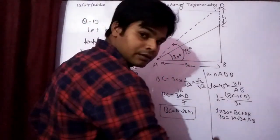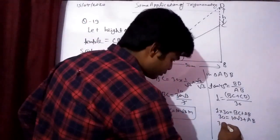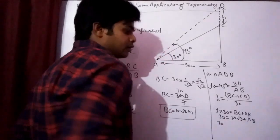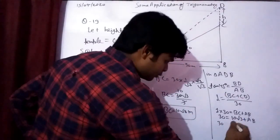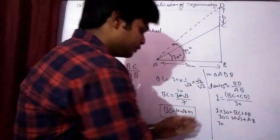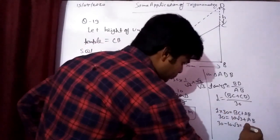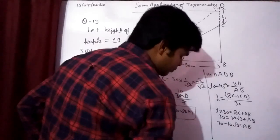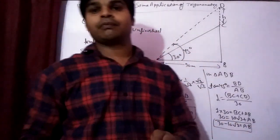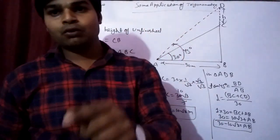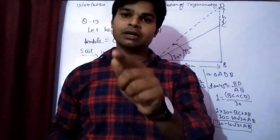So CD equals 30 minus 10 root 3. Changing the side, we get CD equals 30 minus 10 root 3.